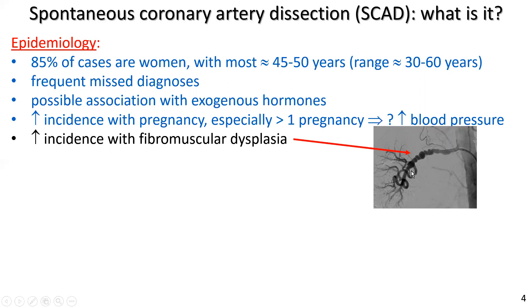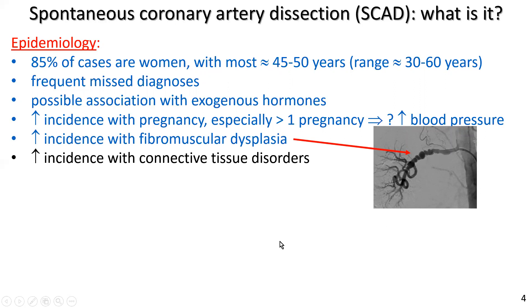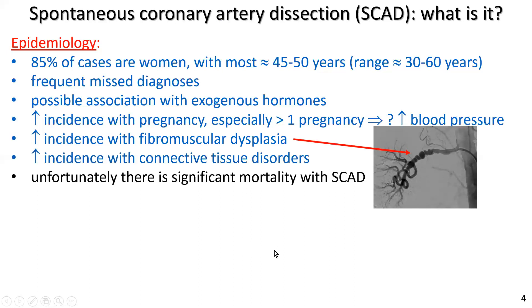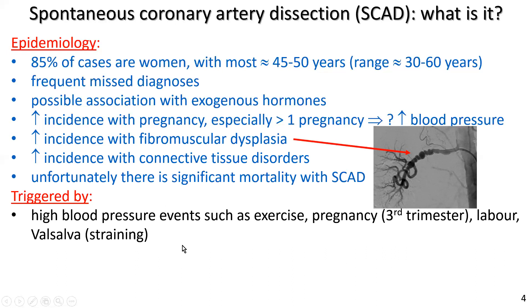These are muscular proliferations. There's an increased incidence with connective tissue disorders. Unfortunately, there is very significant mortality with spontaneous coronary artery dissection, so high recognition is essential for early treatment. It can be triggered by a wide array of events including high blood pressure events such as exercise — and we need to be careful with exercise — as well as pregnancy in the third trimester, labour, postpartum, and straining manoeuvres such as the Valsalva manoeuvre.